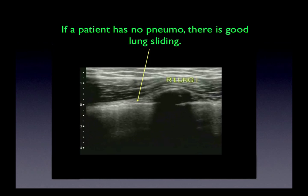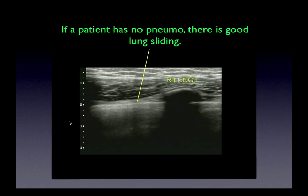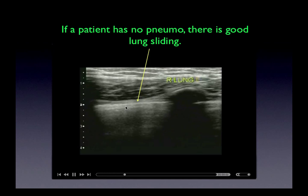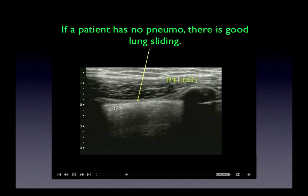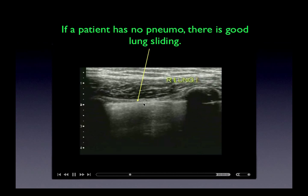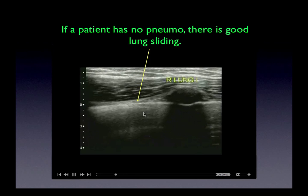Now let's look at ultrasonography as it relates to pneumothorax. If the patient has no pneumothorax, there's what's known as lung sliding. On this loop, we can see subcutaneous tissue and the interface of the parietal and visceral pleura. This line has some shimmering indicating movement, and there are lines coming down which indicate the presence of what's known as B-lines, or comet tail artifacts — all of which shows no pneumothorax.